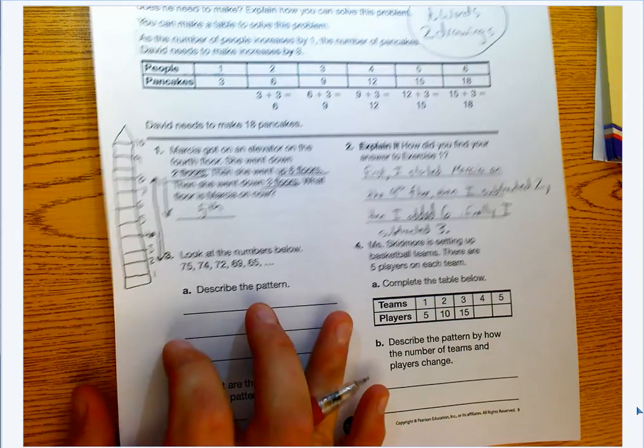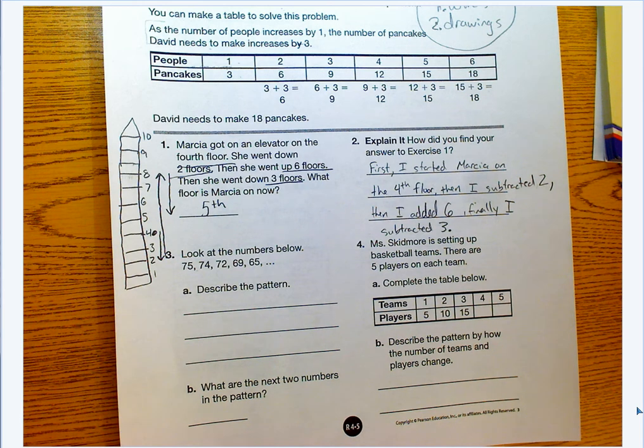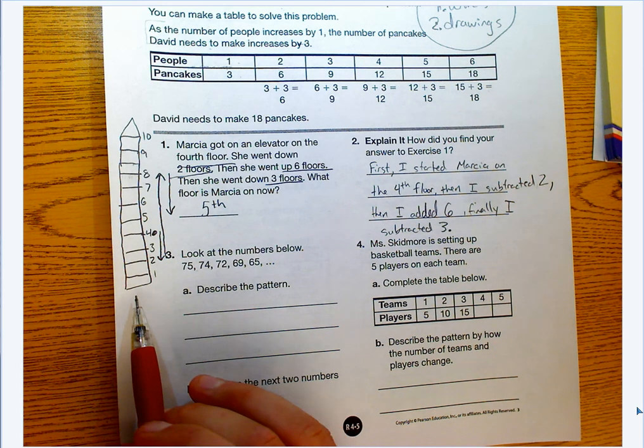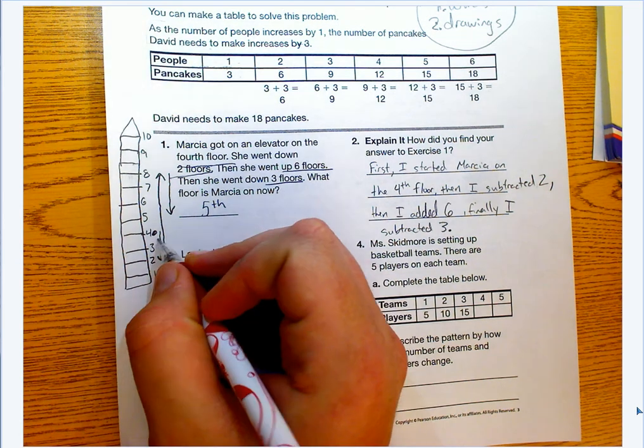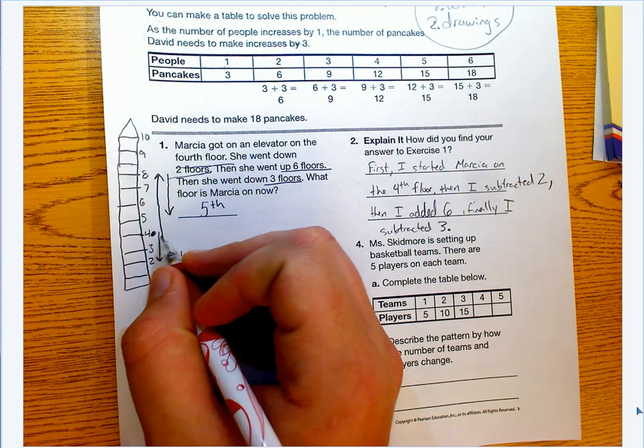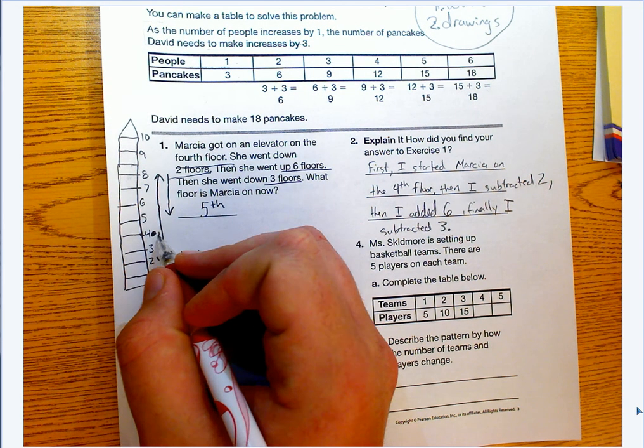I always start with a drawing because it helps me visualize my learning. What I've done here is I've drawn a skyscraper, and I've written the different floors on them that Marsha would be on. So I started with a dot. She starts on the fourth floor, then she goes down two floors.